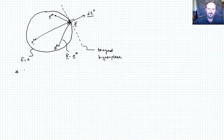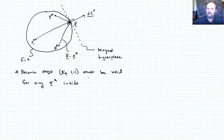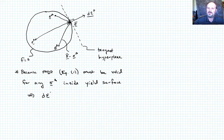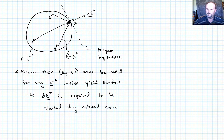Because the maximum dissipation postulate must be valid for any Sigma^a inside the yield surface, the implication is that the plastic strain increment d epsilon^P is required to be directed along the outward normal to the tangent at that location. This is sometimes called the normality rule.